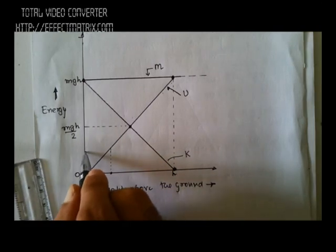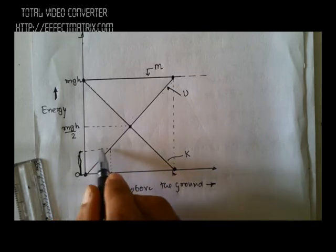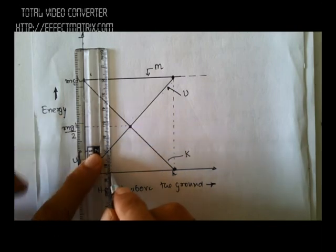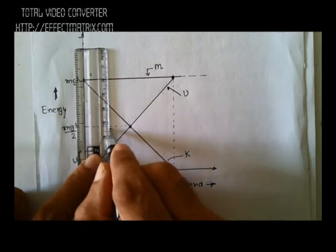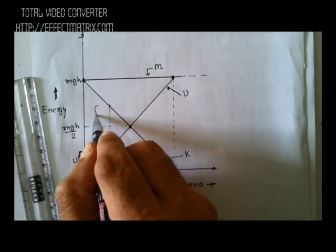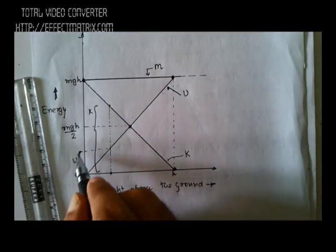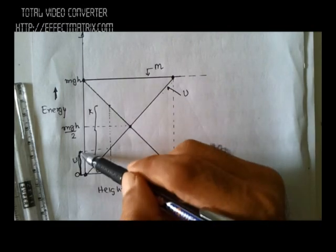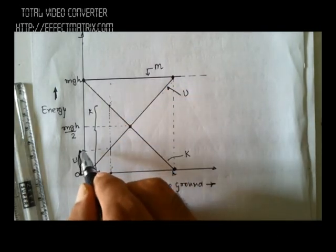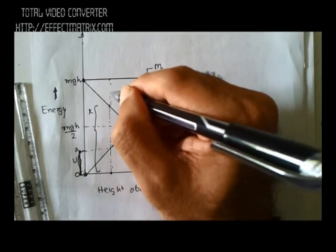At a particular height, if I draw a line onto the potential energy graph, I get the potential energy value at that point. At the same location, going up to the kinetic energy graph gives the kinetic energy. This entire length from zero up to the kinetic energy curve gives kinetic energy, and the remaining portion gives potential energy.